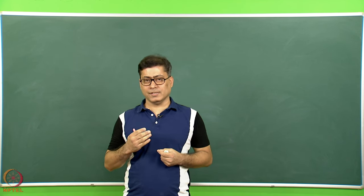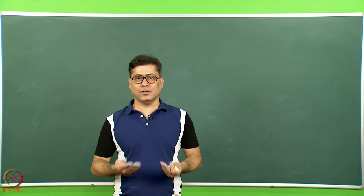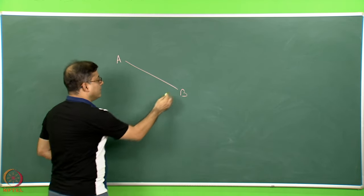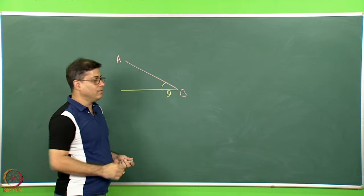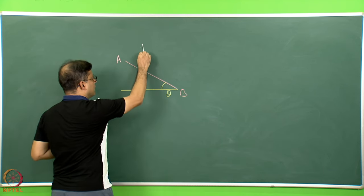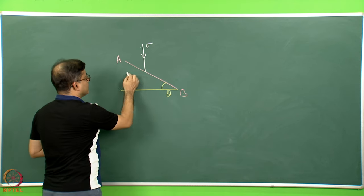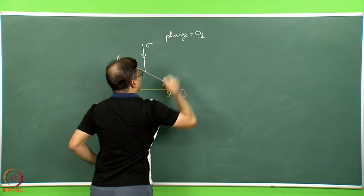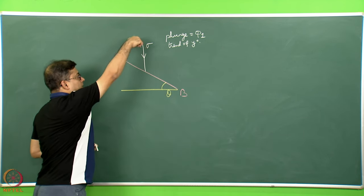Now let us look at how to resolve the stress when the plane is not horizontal. In the previous example the plane was horizontal; now we handle the case where the plane is inclined — which is the geological case. Imagine AB is an inclined plane with a dip of theta. This yellow line is the horizontal plane with which AB makes an acute angle — that is the dip. On this AB plane, a stress of magnitude sigma_x acts, with the line of action having a plunge of phi_1 and a trend of y degrees.